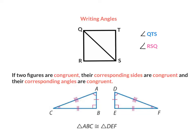When writing angles, we want to trace them with our finger. So for example, angle QTS would be QTS, and we would be talking about this angle here. Now for angle RSQ, we would trace with our finger RSQ, and we would be talking about this angle here. The reason why we don't want to just say angle S is because we could be talking about this angle here, or we could be talking about this angle here.